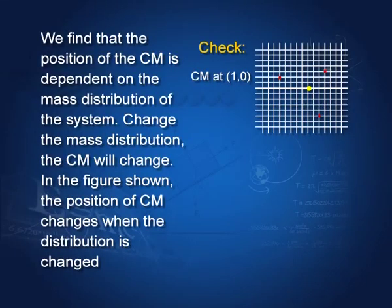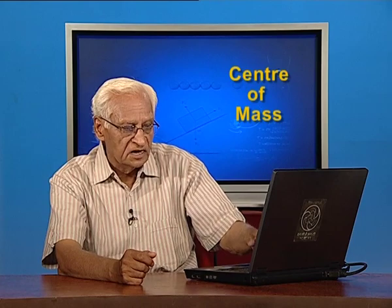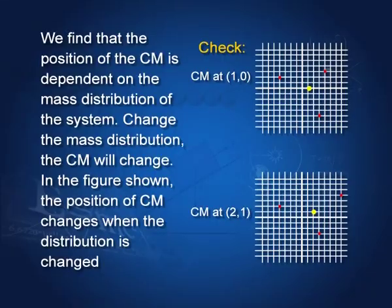Let us take another example. We have three particles on a grid with given coordinates — for instance, one particle at (4, 3), and so on. If you calculate their centre of mass, it corresponds to the dark dot shown, with coordinates (1, 0). If you change the distribution — take the same masses but place them at different coordinates — the centre of mass now lies at a different point, with coordinates (2, 1). This shows that the centre of mass is a function of mass distribution in the body. It is not a fixed thing; if mass distribution changes, the centre of mass also changes.